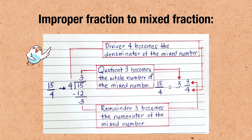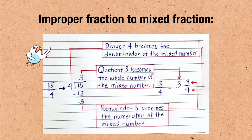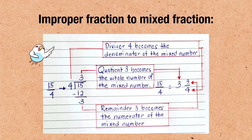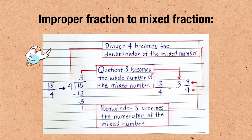Now, to convert an improper fraction to a mixed number, divide the numerator by the denominator. For example, fifteen over four: fifteen divided by four equals three. Three times four equals twelve. Fifteen minus twelve equals three. So, the divisor four becomes the denominator, the quotient three becomes the whole number, and the remainder three becomes the numerator. Therefore, fifteen over four becomes three and three-fourths.